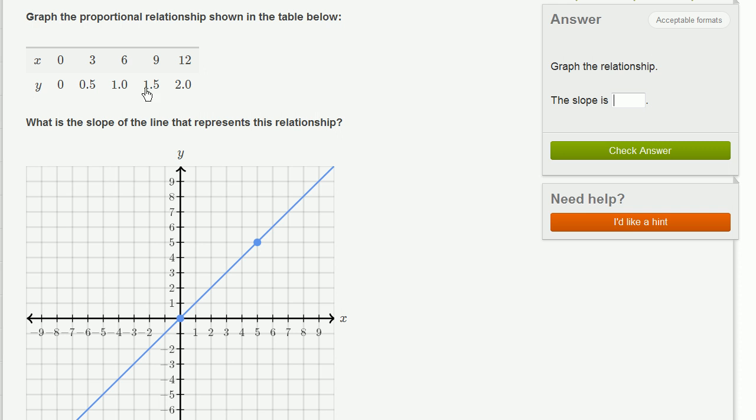Let's graph one of these that has integer values for both coordinates. When x is 6, y is 1. We only need two points to specify the line, so we've actually graphed it.